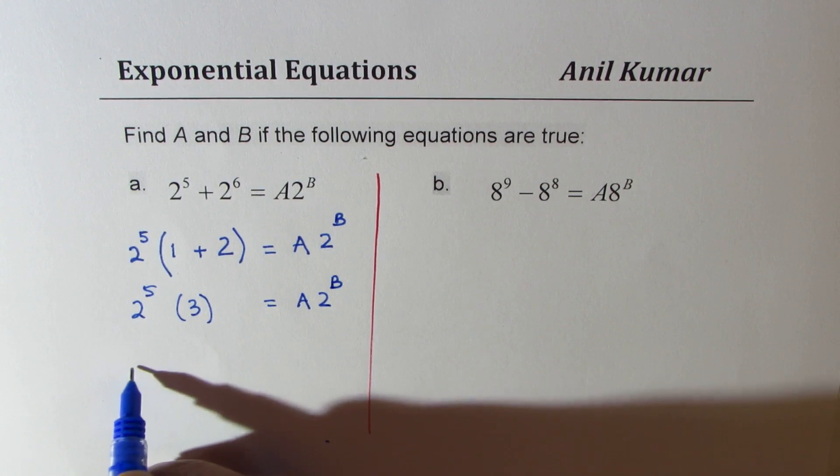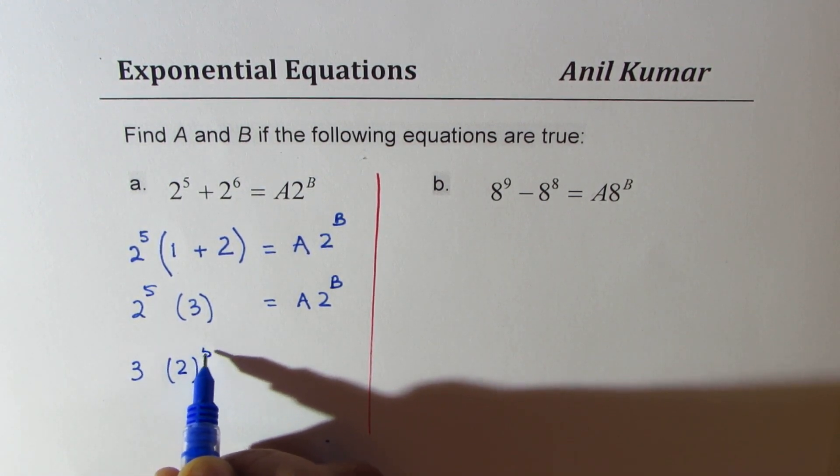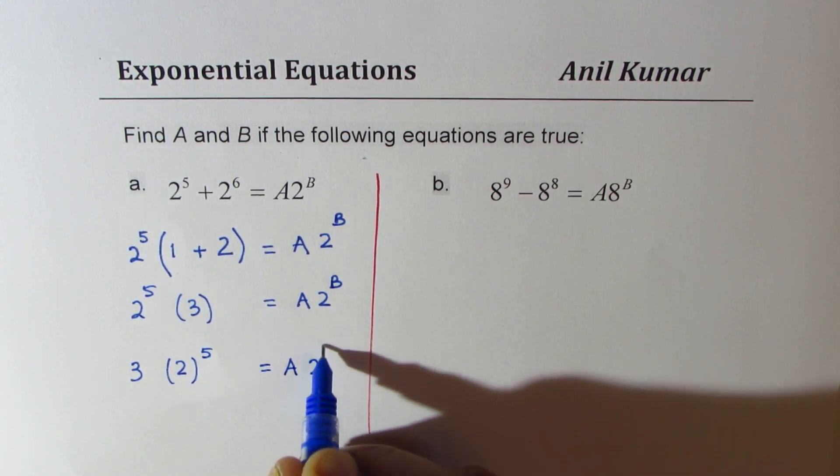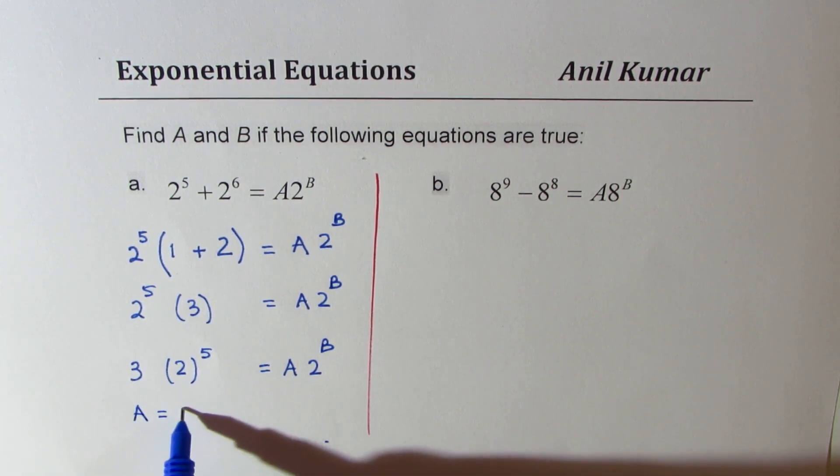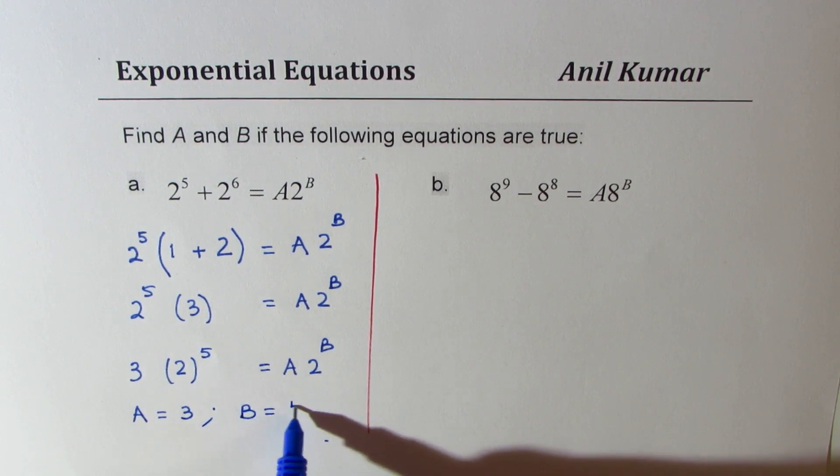So the left side could be written as 3 × 2^5, and that equals A × 2^B. So if you compare, you can easily say that A = 3 and B = 5.